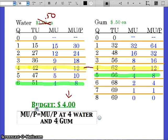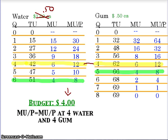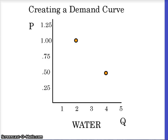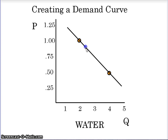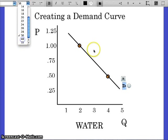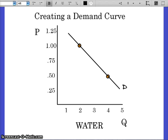We have a new utility maximization level. Going back to the graph, we now see that when water is 50 cents, we buy 4. Put the plot point at 4, 50 cents. We now have two dots — two dots is enough to connect them. I want to extend the line on down to make it a full-blown demand curve. I need to mind my p's and q's. We now have a demand curve for water.